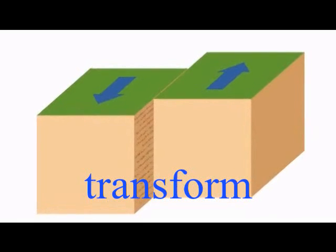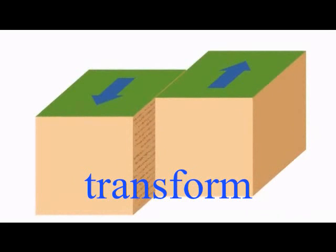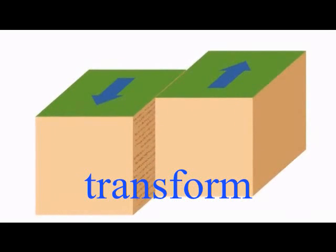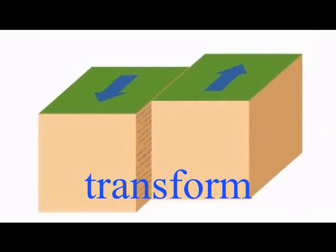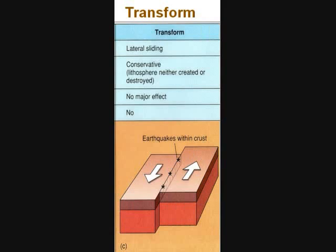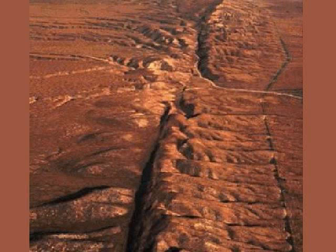The third type of plate movement is called transform. In this movement, the two plates merely move from side to side, sideways in a lateral movement. This movement neither creates nor destroys crust. This movement moves the plates back and forth, causing violent earthquakes.